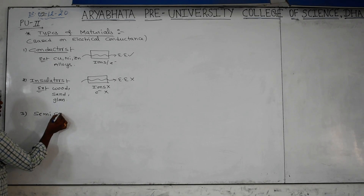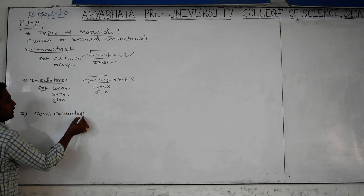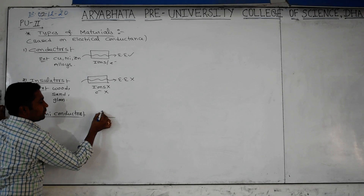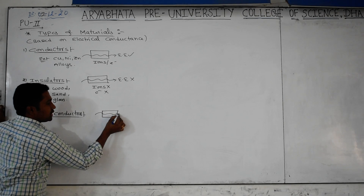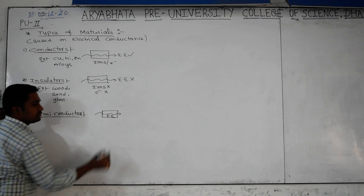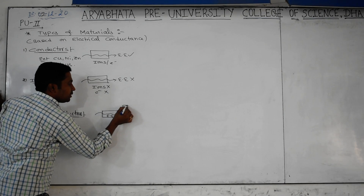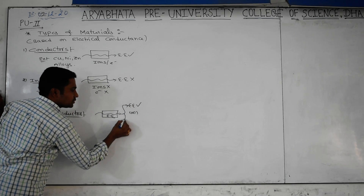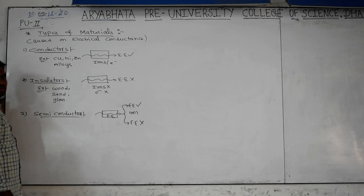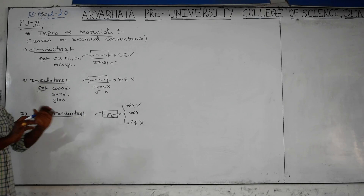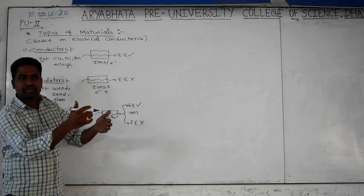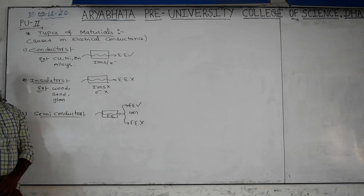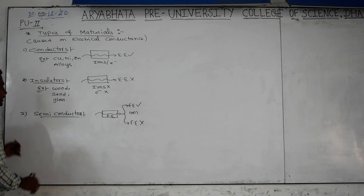Third category is semiconductors. In solid state we learned concepts regarding semiconductors. A semiconductor is a type of material through which electrical energy sometimes passes and sometimes does not - sometimes acting as a conductor, sometimes as an insulator.